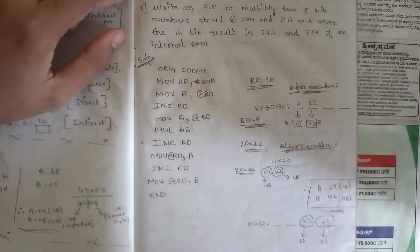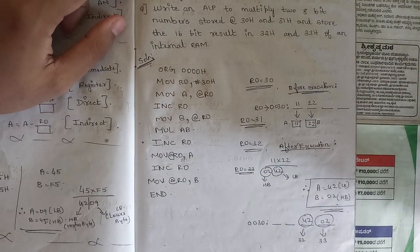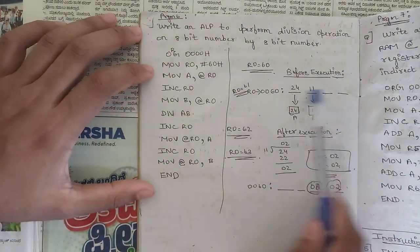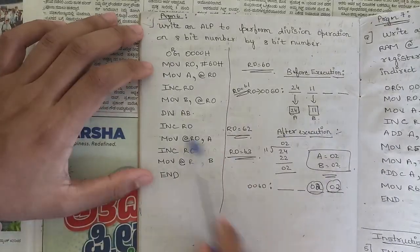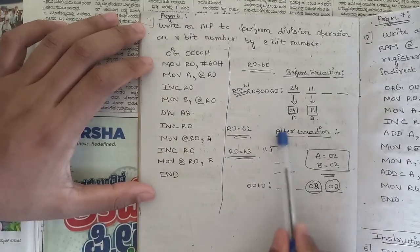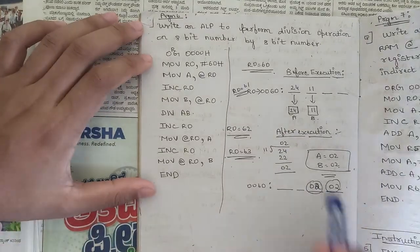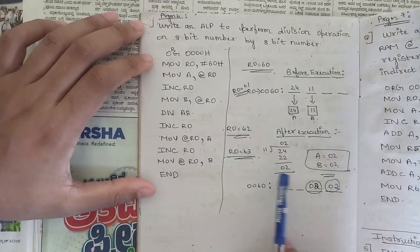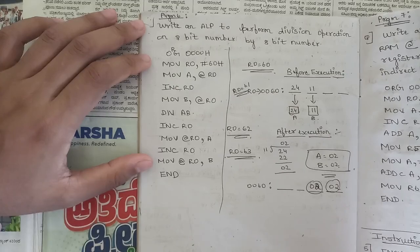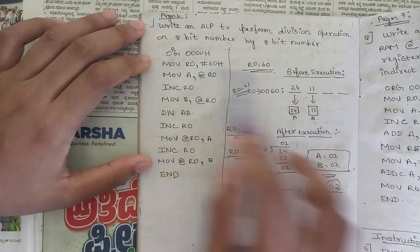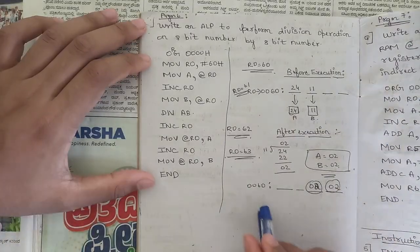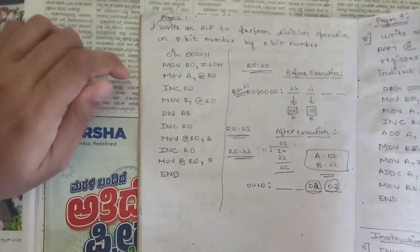This completes the multiplication program. The next program is for division — similar structure, but the instruction used is DIV A, B. After division, the quotient is always stored in A and the remainder is always stored in B. The rest of the program structure — moving data, declaration — remains the same. Please note this division program as well; multiplication and division programs are very important for the exam.